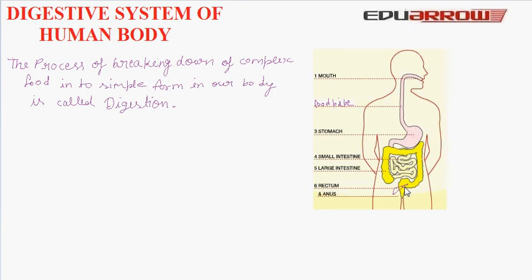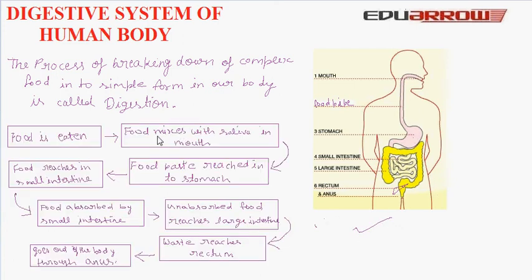This is the digestive system of the human body. We can show the digestion cycle like this: food is eaten; food mixes with saliva in the mouth; food paste reaches the stomach; food then enters the small intestine; food is absorbed by the small intestine; unabsorbed food reaches the large intestine; waste reaches the rectum and goes out of the body through the anus.